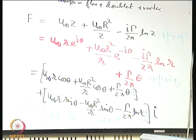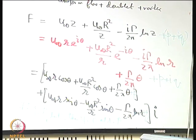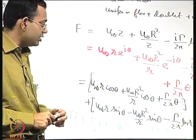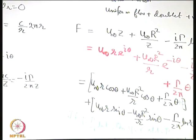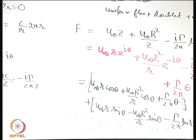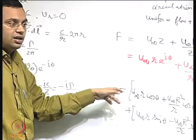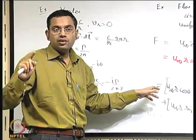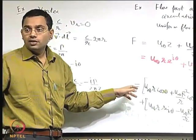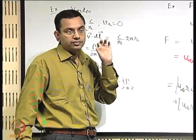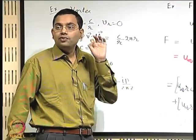When you have a body of a particular shape, an important quantity of interest is the stagnation point. For flow past a circular cylinder without circulation — where the γ term is absent — dF/dz gives V_r = 0 everywhere on the cylinder and V_θ proportional to sin θ. So when θ = 0, V_θ = 0 as well.